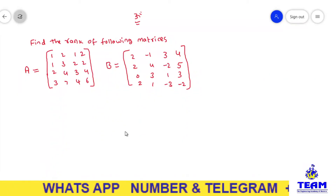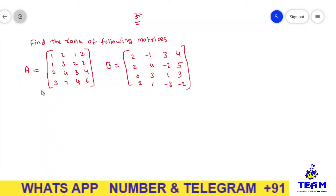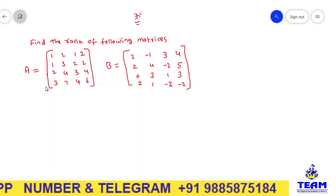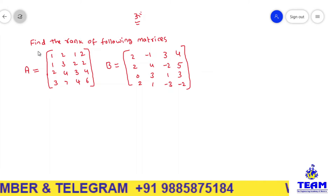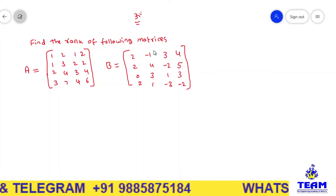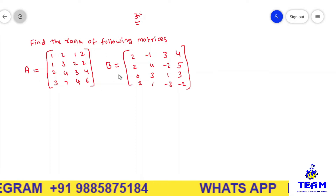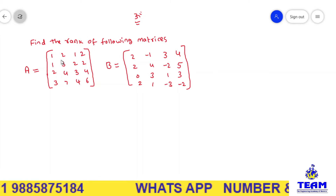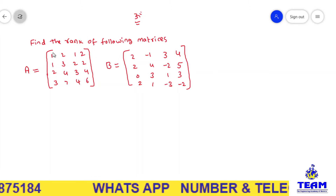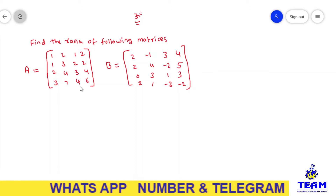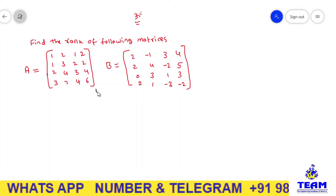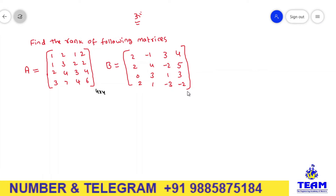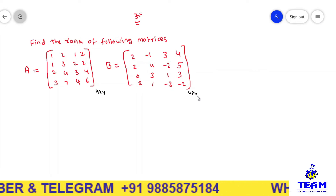Hi friends, welcome back to TE Medication. In this video we are solving problems on matrices. The given problem is to find the rank of the following matrices. They are given two matrices. First matrix A is of order with 4 rows and 4 columns, so it is a 4 by 4 matrix. Second matrix B is also having 4 rows and 4 columns.